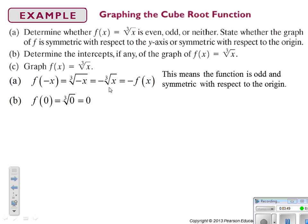Determine the intercepts of f of x equals cube root of x. We plug in 0 for x — when x is equal to 0, that tells us the y-intercept. The cube root of 0 is 0, so the x and y-intercepts are both 0.